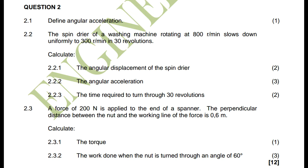They say: the spin dryer of a washing machine rotating at 800 revs per minute slows down uniformly to 300 revs per minute in 30 revolutions. Calculate: the angular displacement of the spin dryer; the angular acceleration; and the time required to turn through 30 revolutions.